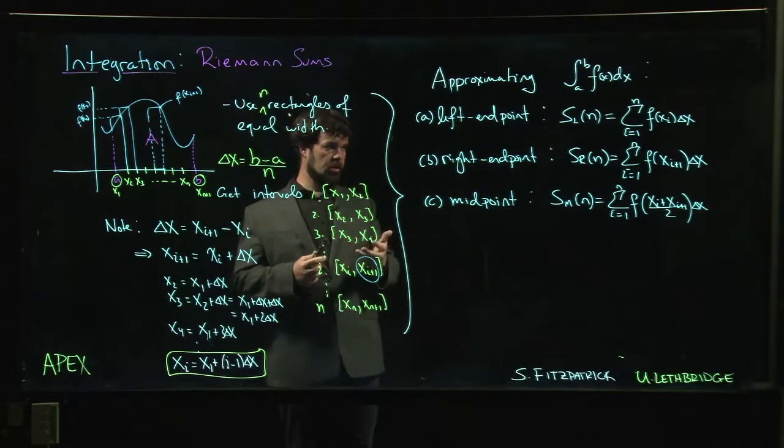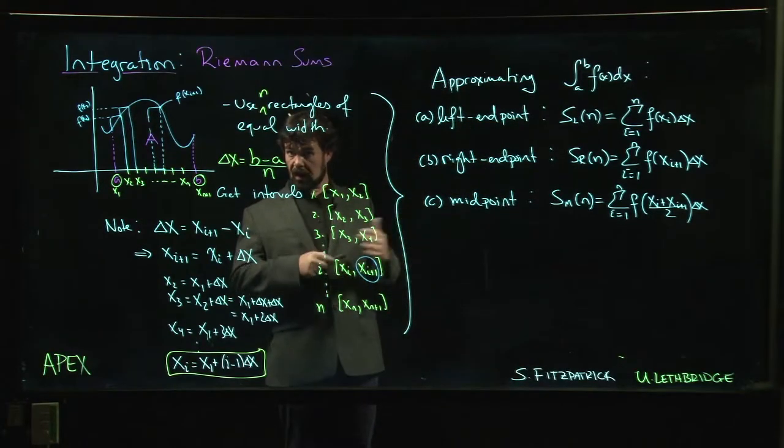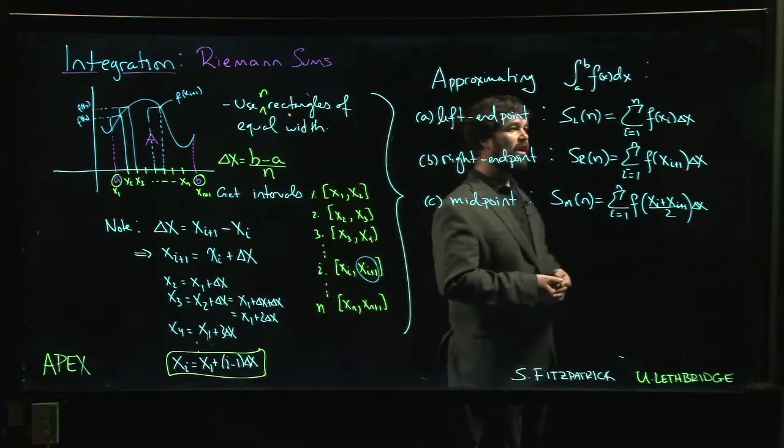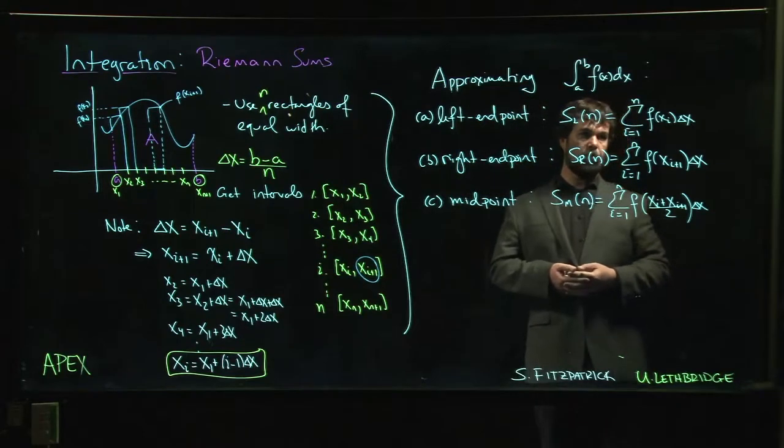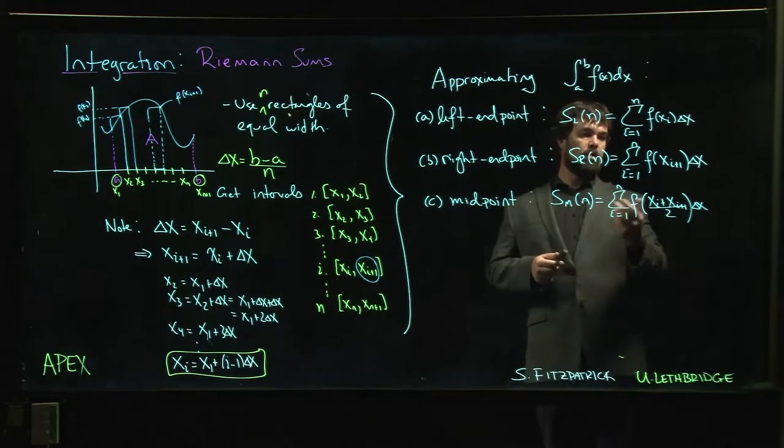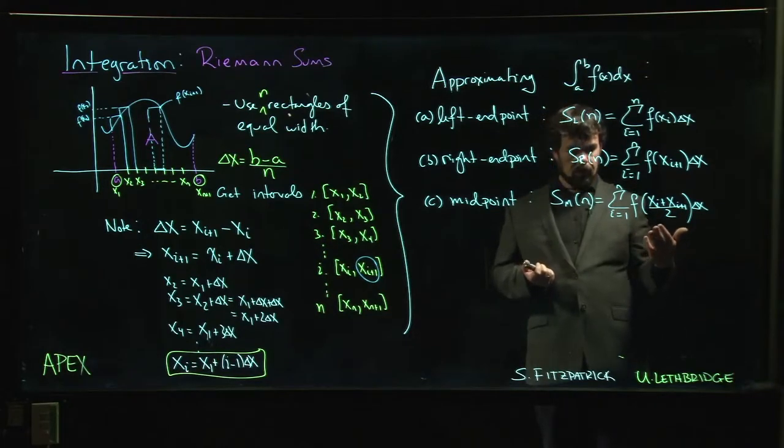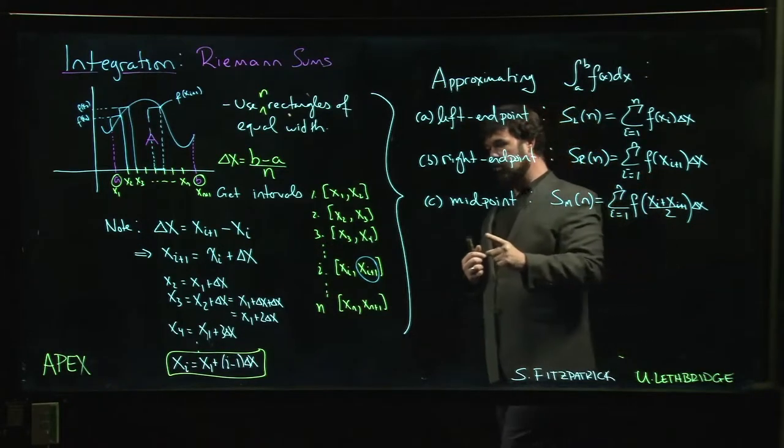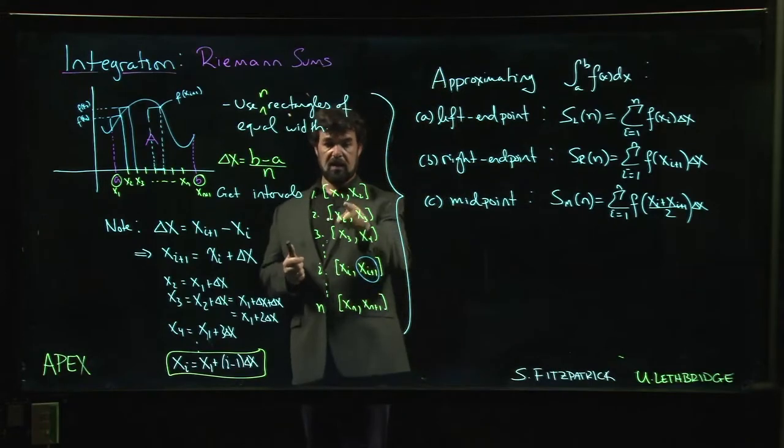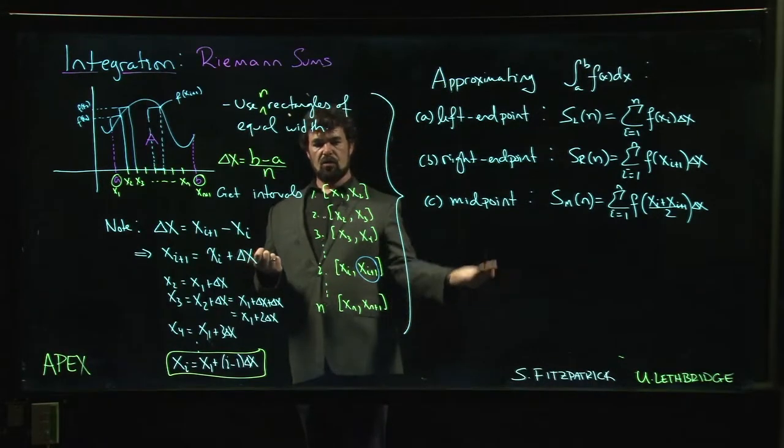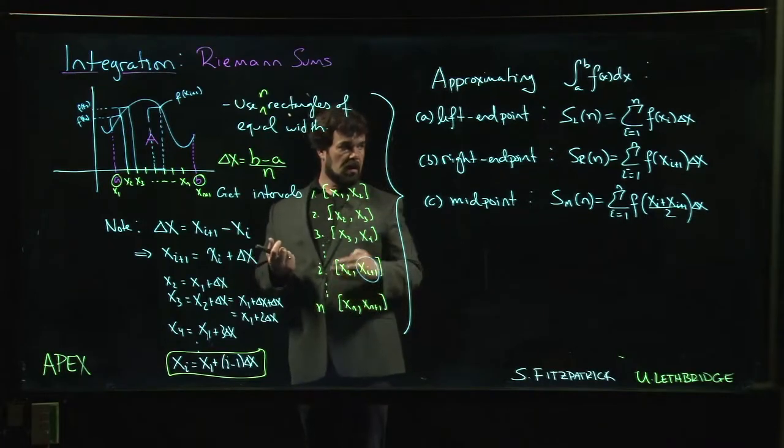One of the other things you can do, which we don't look at in Apex Calculus—this is something you'd see in a more advanced textbook—is you can look at what are called Darbu sums. In a Darbu sum you use the fact that for a continuous function, you're always guaranteed on every one of these intervals an absolute minimum and an absolute maximum.